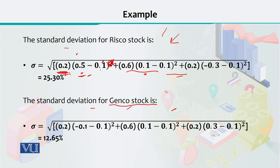The RISCO standard deviation was 25.3%, and the GENCO stock value came out to 12.65%. As I told you earlier, a smaller value of standard deviation represents a lower level of risk. Because RISCO's standard deviation is 25.3%, it means RISCO stock returns are more risky compared to GENCO stock. The standard deviation of GENCO stock is 12.65%, which is much less than that of RISCO stock.